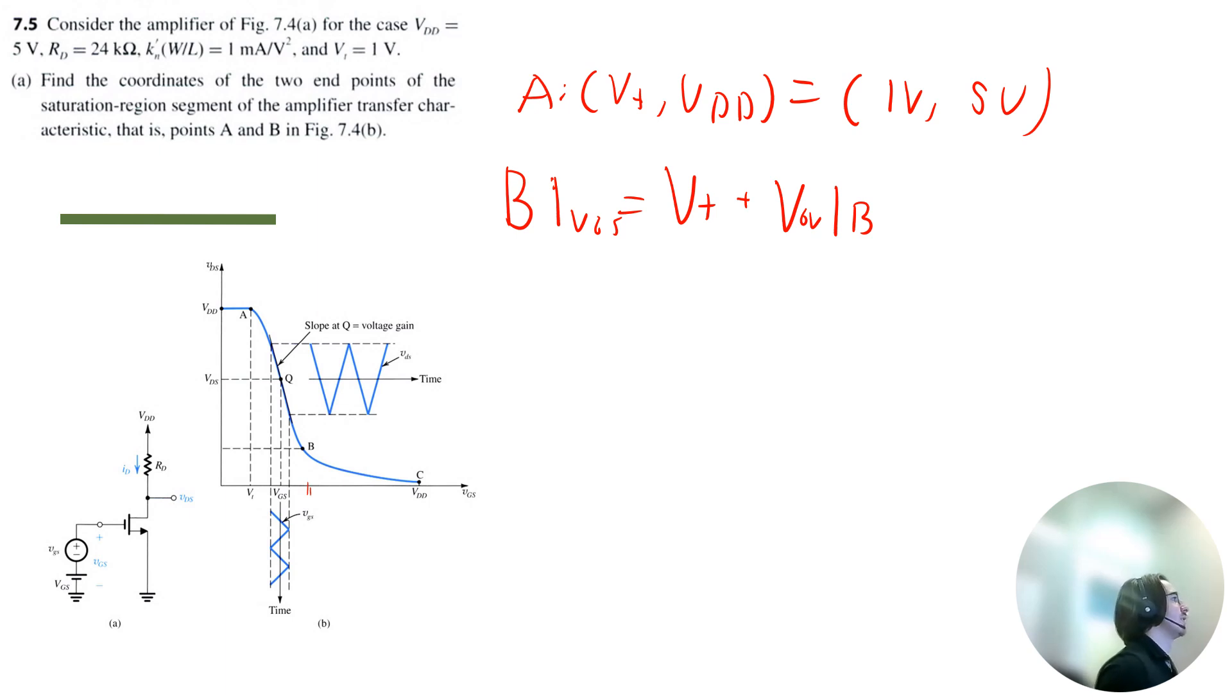And on the Y axis, VDS, we'll just call that VDS at B. VDS at B is actually equal to V overdrive at B. And that is equal to square root of 2 times Kn times RD times VDD plus 1, minus 1, divided by Kn times RD.